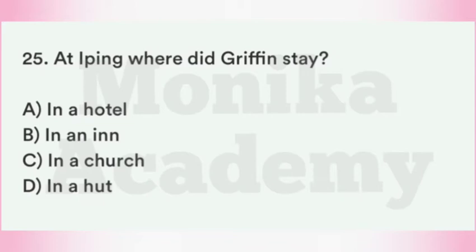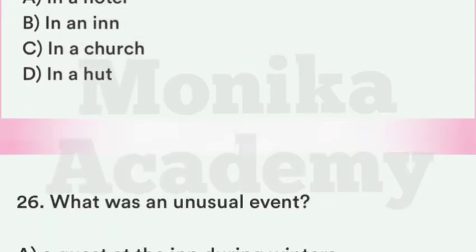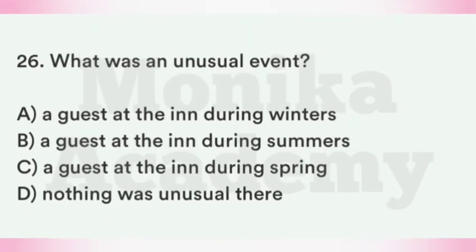Question 25: At Ipping, where did Griffin stay? Option A: In a hotel. Option B: In an inn — एक सराय जहाँ travellers रुकते हैं. Option C: In a church. Option D: In a hut. The correct answer is B, in an inn — Griffin जब Ipping Village में पहुँचा तो वहाँ टहरने के लिए उसने एक inn चुना.